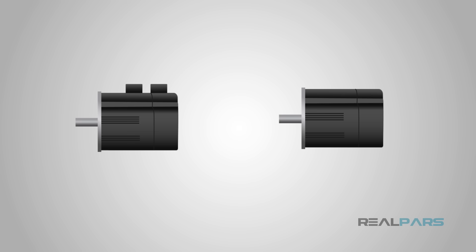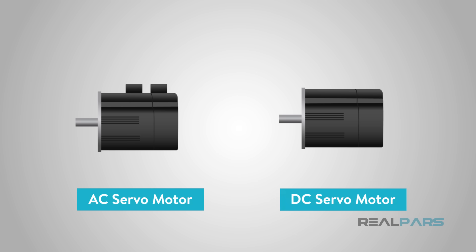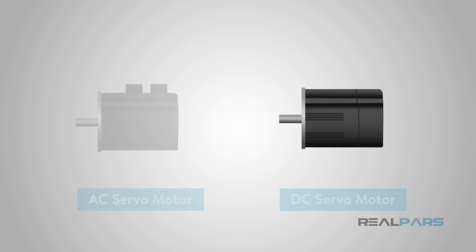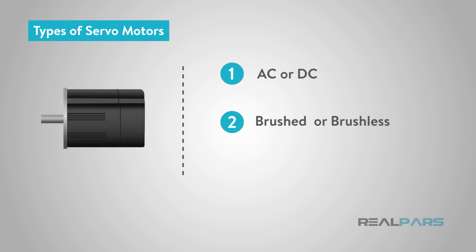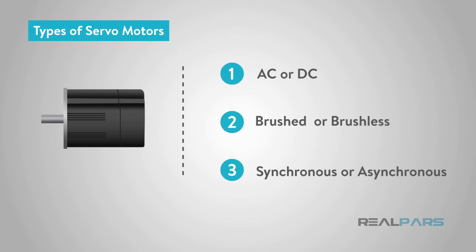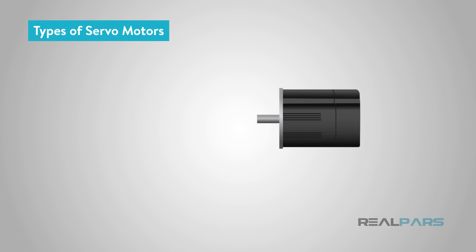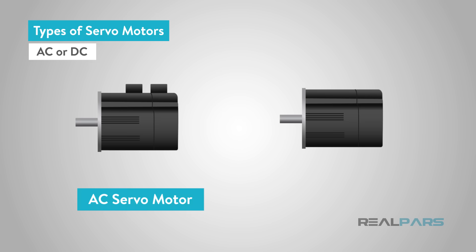Types of servo motors are classified into different types based on their application, such as the AC servo motor and DC servo motor. There are three main considerations to evaluate servo motors: first, based on their current type — AC or DC — and secondly on the type of commutation used, whether the motor uses brushes, and the third consideration is the motor's rotating field, the rotor, whether the rotation is synchronous or asynchronous. The AC or DC consideration is the most basic classification of a motor based on the type of current it will use.